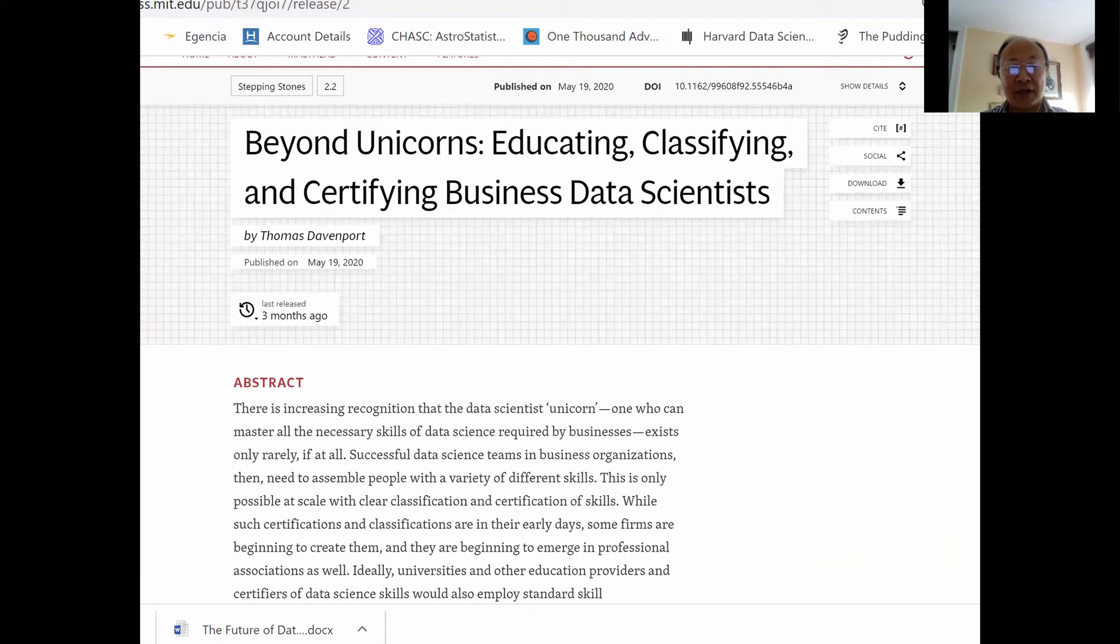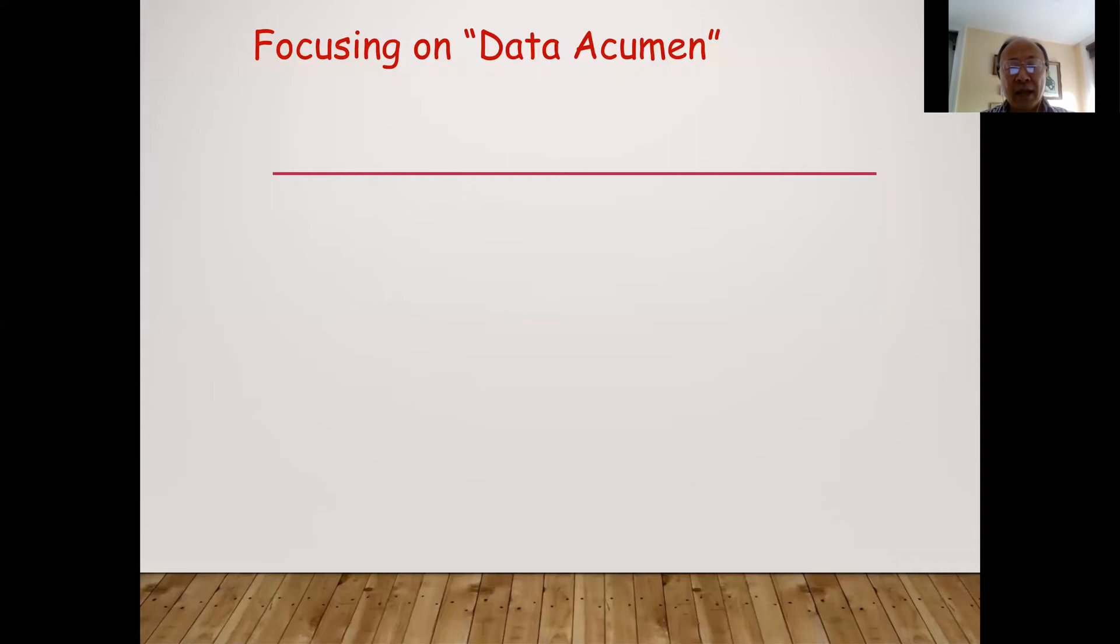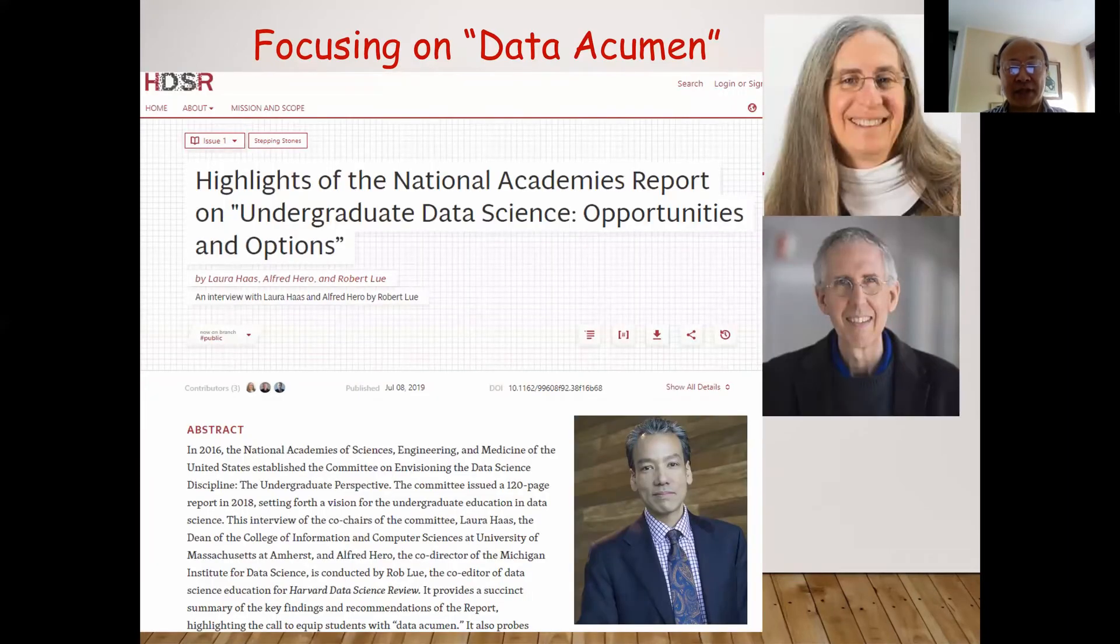One person can't really know it. We really need teamwork. And this is a point made very clearly by Professor Dempour, who's going to talk very soon on this very topic published in Harvard Data Science Review. So I'm not going to steal his thunder, but his point is we really need to have teams. And the National Academy of Science issued the report on undergraduate data science opportunities and options in which they emphasize the notion of data acumen. And again, Harvard Data Science Review in the first issue interviewed two of their co-chairs and conducted by my co-editor on data science education, Rob Gould.